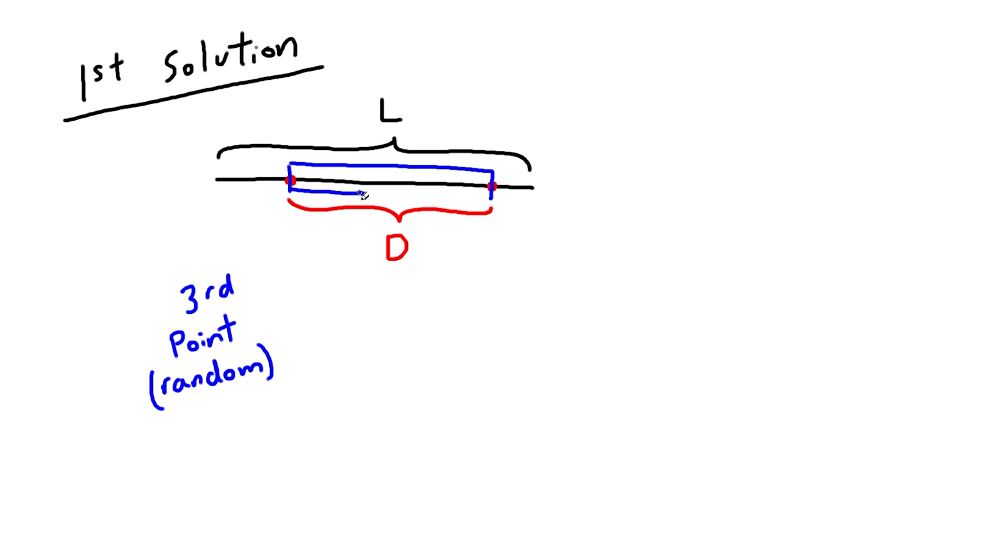What is the probability that this third point, this blue point, is between the two red points? The answer is just the distance between the red points divided by the line segment length. If you're having trouble seeing why, here's an example.